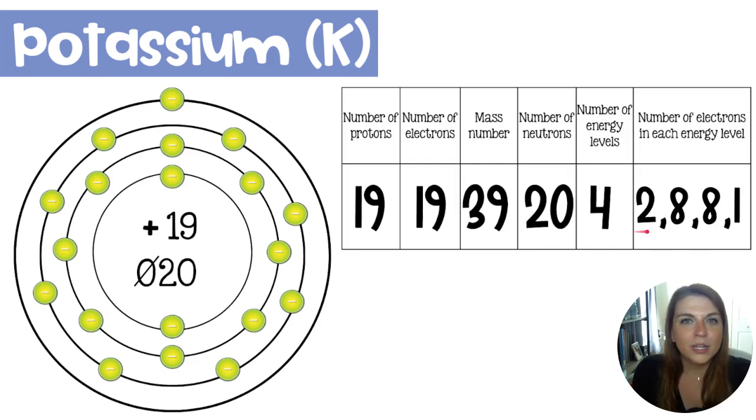A maximum of two electrons fit in the first energy level. Then we'd have eight, because there's eight elements in the second period of the periodic table. Again, that would also be true for the third period and the third energy level. All of that together would give us 18 electrons, but because potassium has 19, we will have to put one in the fourth energy level.